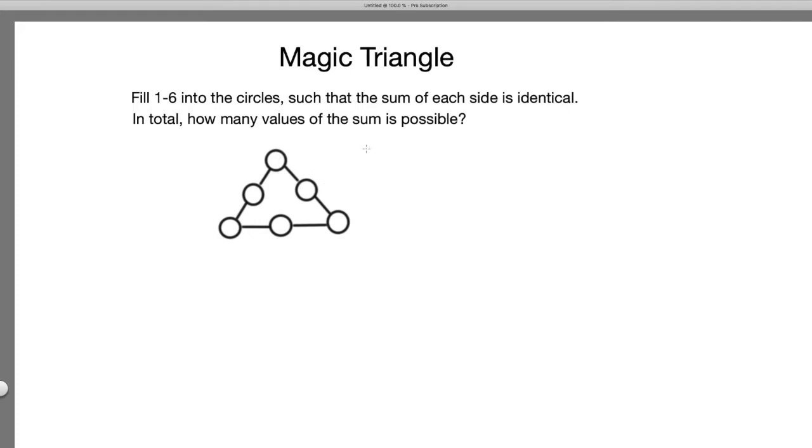Now the question is: is 9 possible, 8 possible, or is 11 possible, 12 possible? The question asks how many possible values of the sum are there?